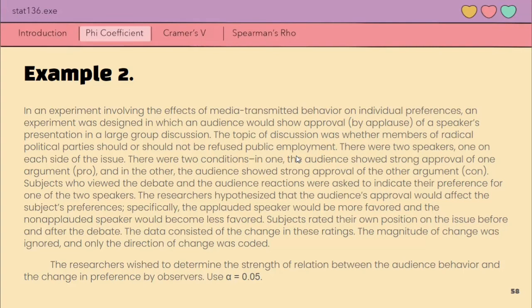Subjects rated their own position on the issue before and after the debate. The data consisted of the change in these ratings. The magnitude of change was ignored and only the direction of change was coded. The researchers wished to determine the strength of relation between the audience behavior and the change in preference by observers. Use alpha equals 0.05. So basically, this problem is saying that there is an experiment to determine kung naka-apekto ba yung audience behavior sa kung sinong speaker ay to favor mo. Kung mas malakas ba yung palakpak for the pro speaker, will it change from your initial preference na con, and vice versa.